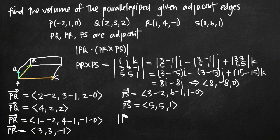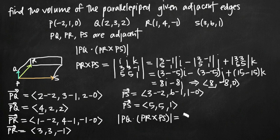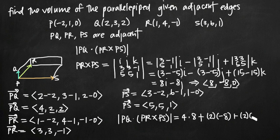Now to find the dot product of PQ with our cross product result, we multiply corresponding components of our two vectors. We take the x component 4 times 8, plus the y components 2 times negative 8, plus the z components 2 times 0. When we simplify, we get 32 minus 16 plus 0, which equals 16.